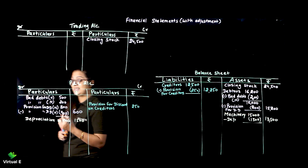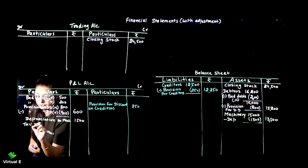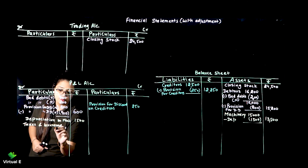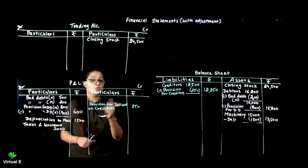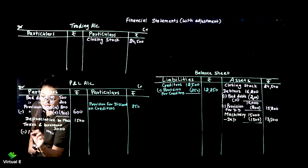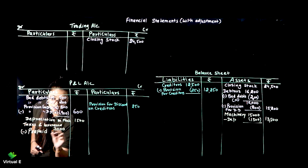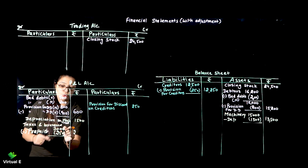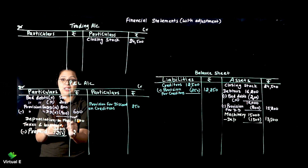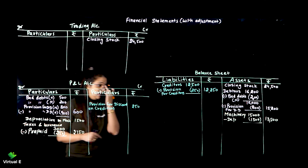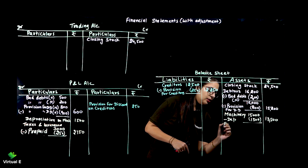Taxes and insurance is already given: rupees 3,000. From this 3,000, prepaid amount is 250, so we minus the prepaid: 3,000 minus 250 equals 2,750. Remember - whenever anything is prepaid, it goes to assets. So we write prepaid insurance of 250 in assets.